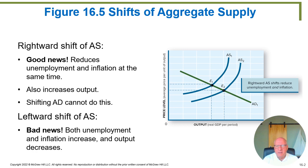If we really screwed up and shifted the aggregate supply curve to the left, then you would have really bad news, because then you would be damaging two good things at the same time. You would be reducing output, which increases unemployment, and you would be increasing inflation. So we definitely want rightward shifts in aggregate supply — not leftward shifts.